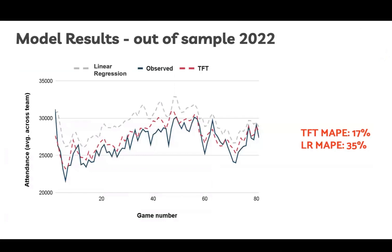For model evaluation, we use 2022 data as out-of-sample test data. We choose Mean Absolute Percentage Error (MAPE) as our key metric, since using absolute errors like MAE or RMSE can be misleading when some teams have relatively lower mean attendance. Our baseline linear regression model achieved a MAPE of 35%, while our Temporal Fusion Transformer achieved a MAPE of 17%, providing nearly 20% more accuracy.